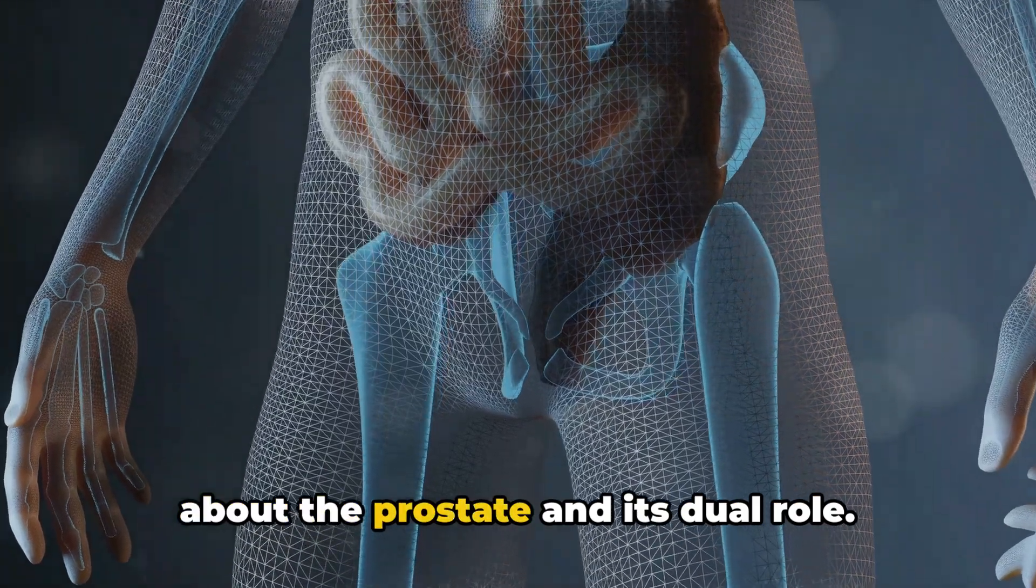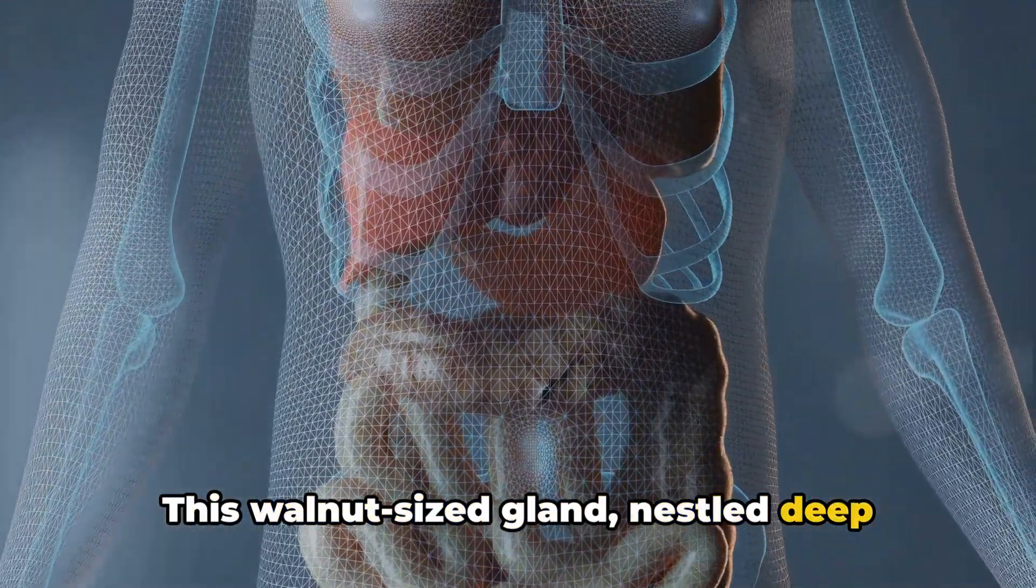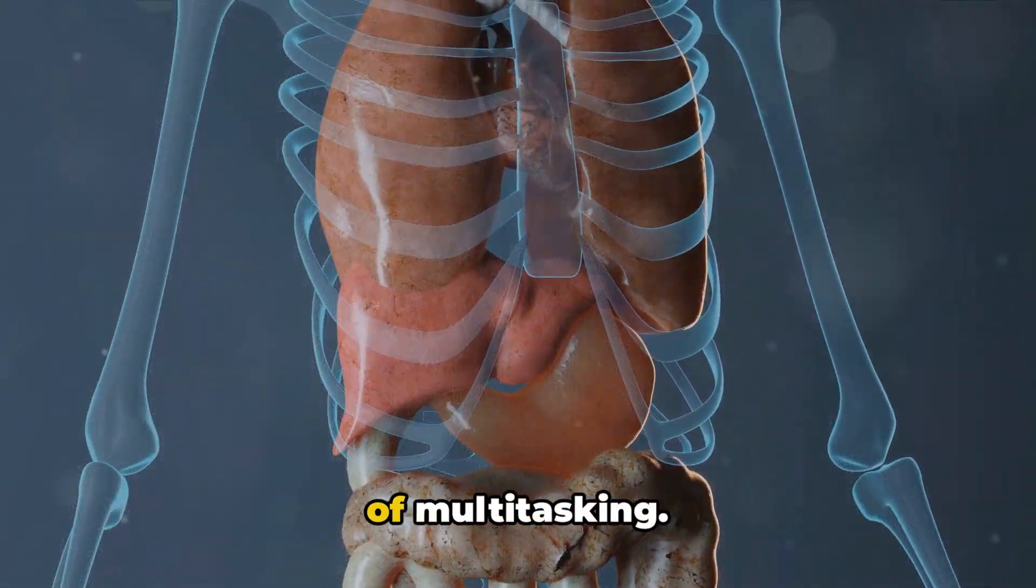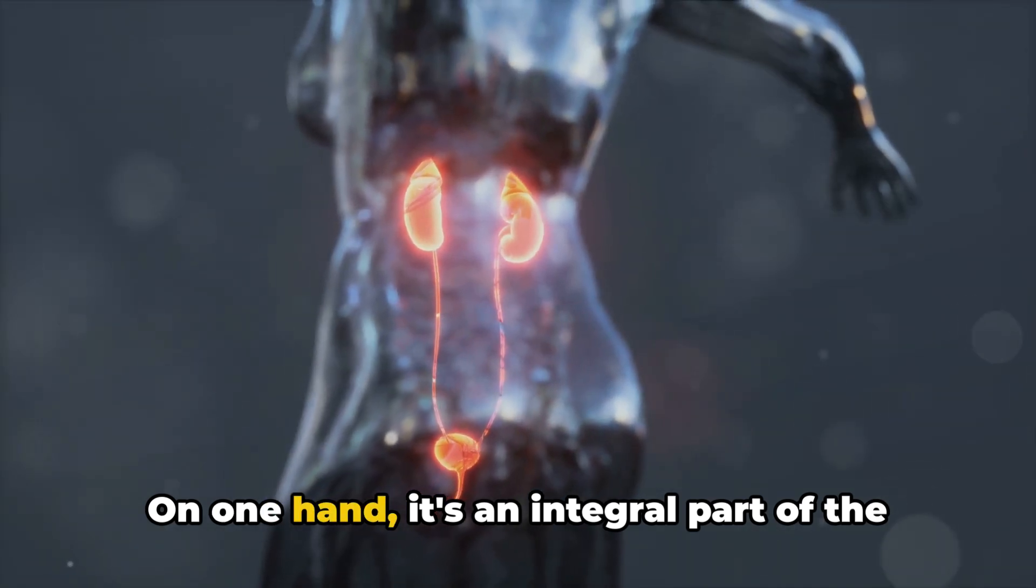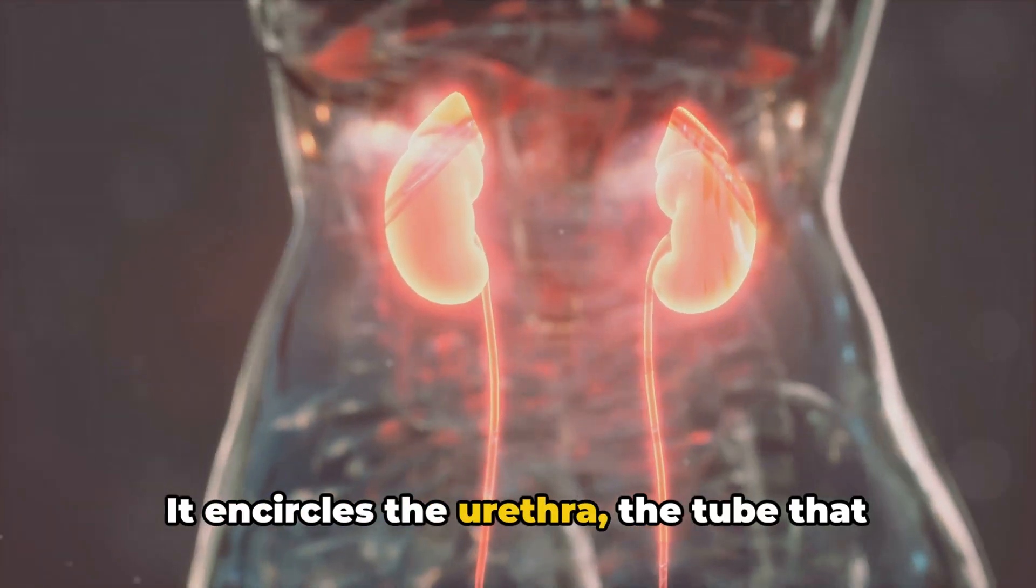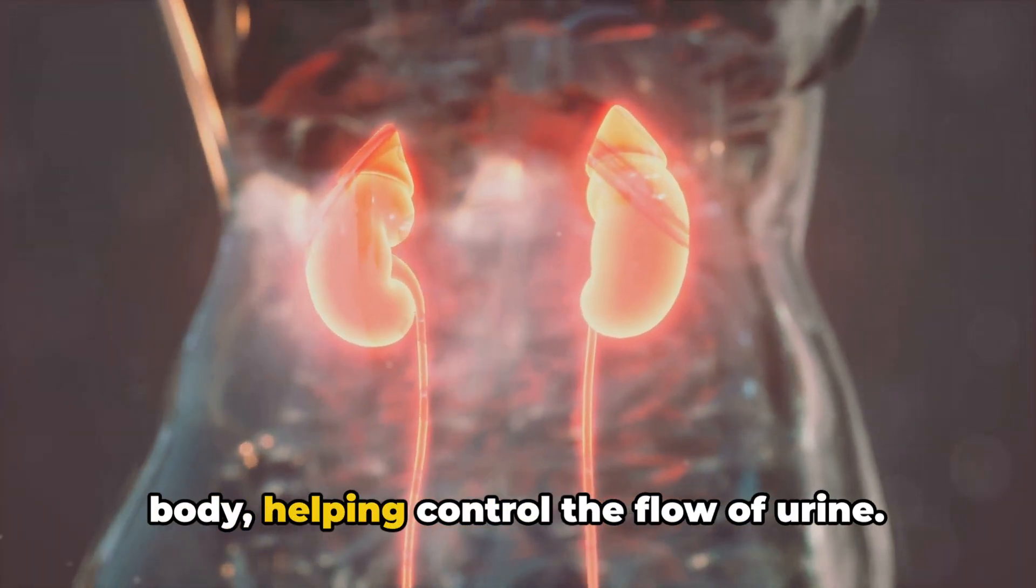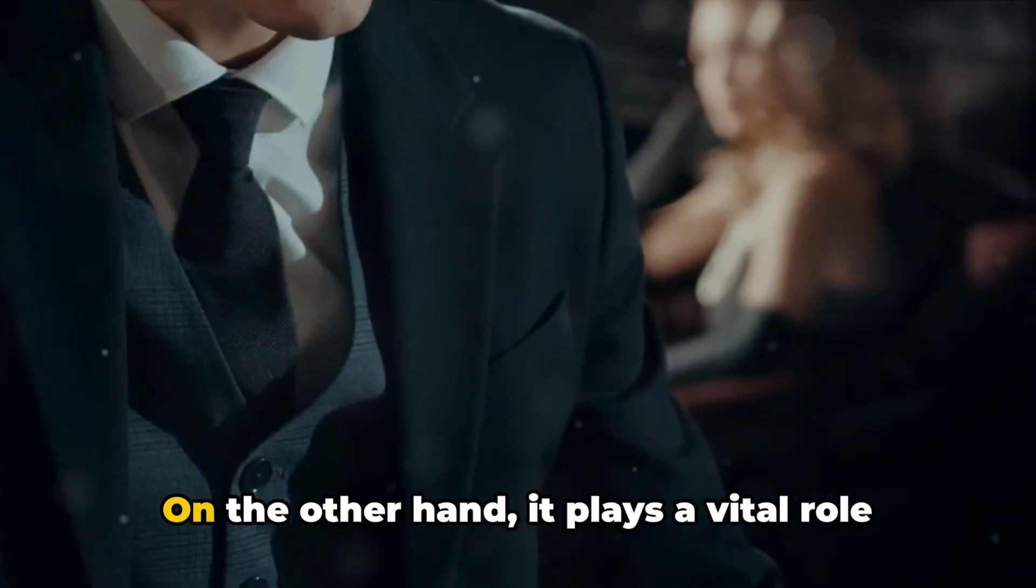Coming in at number 6, let's talk about the prostate and its dual role. This walnut-sized gland, nestled deep within the male pelvis, is a real marvel of multitasking. On one hand, it's an integral part of the urinary system. It encircles the urethra, the tube that carries urine from the bladder out of the body, helping control the flow of urine.